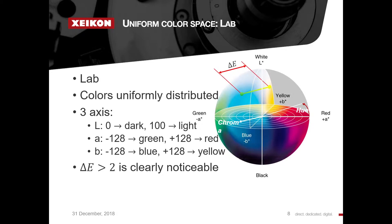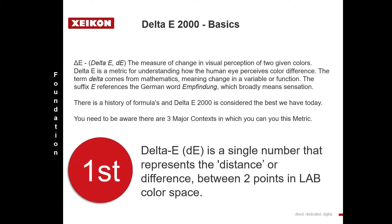Delta E is a measurement within that colour space between two points. I'm not going to try to pronounce this word properly, but the E stands for 'Empfindung' — sorry to my German listeners — which basically means sensation, and delta means a difference. So first we need to understand what LAB is, and once we have that idea we can start to think about Delta E. That is our foundation.